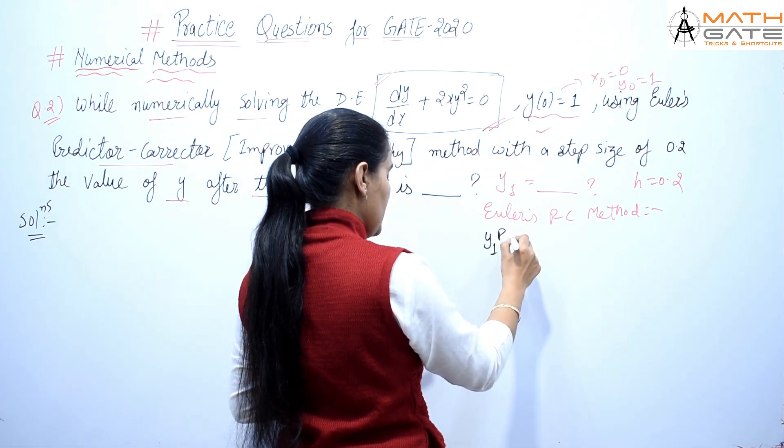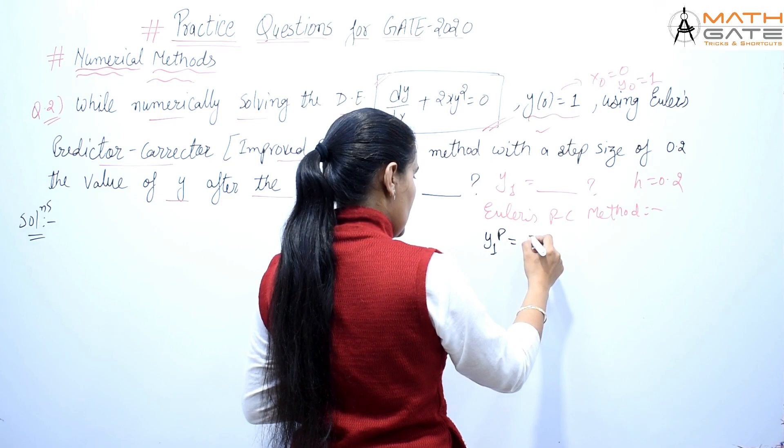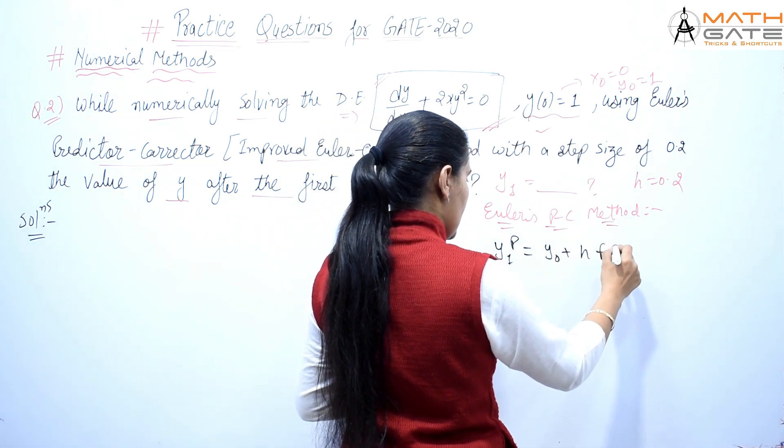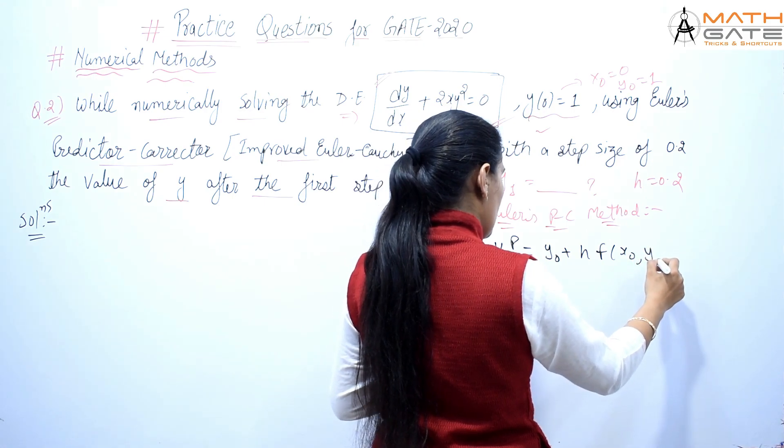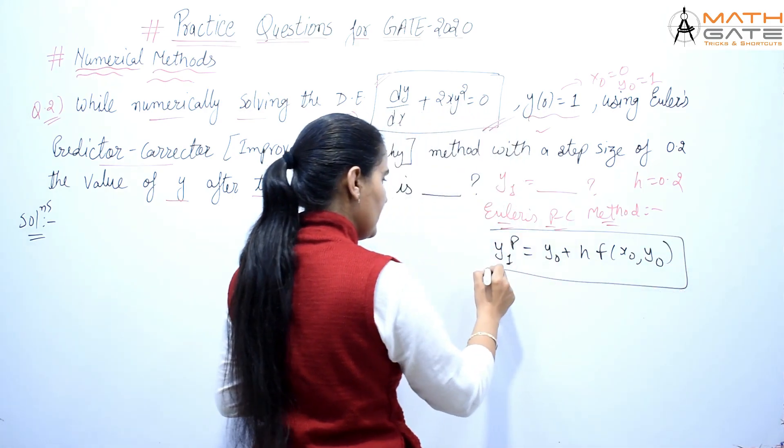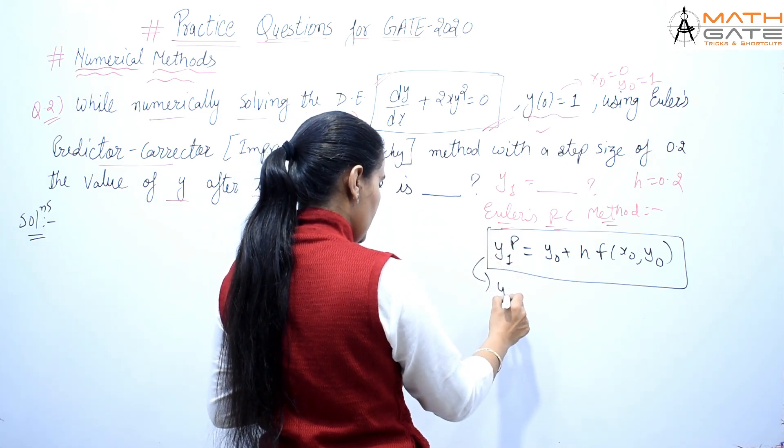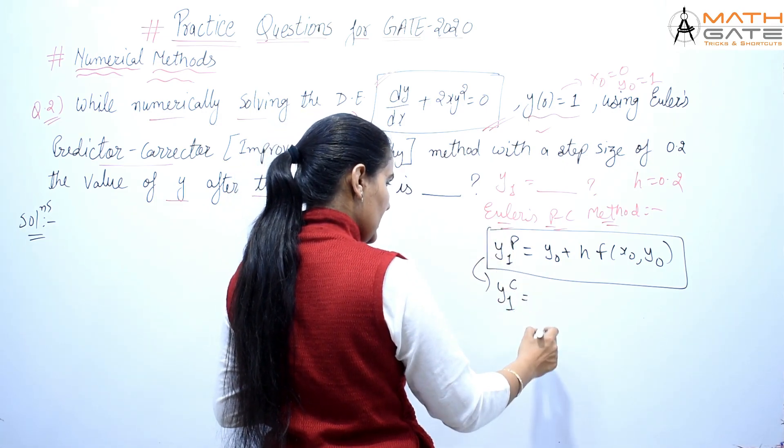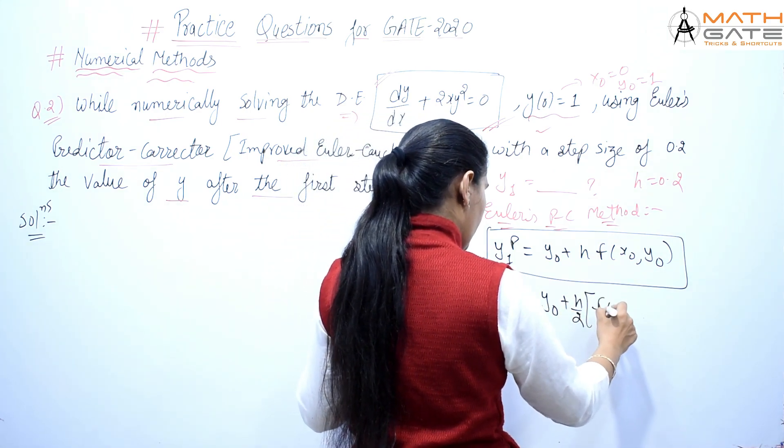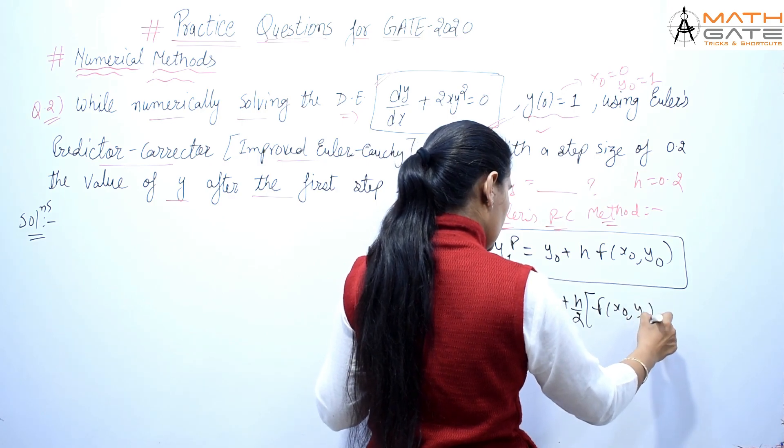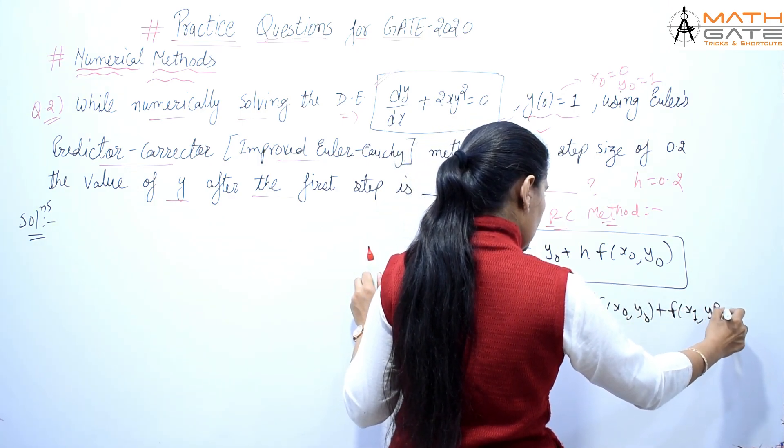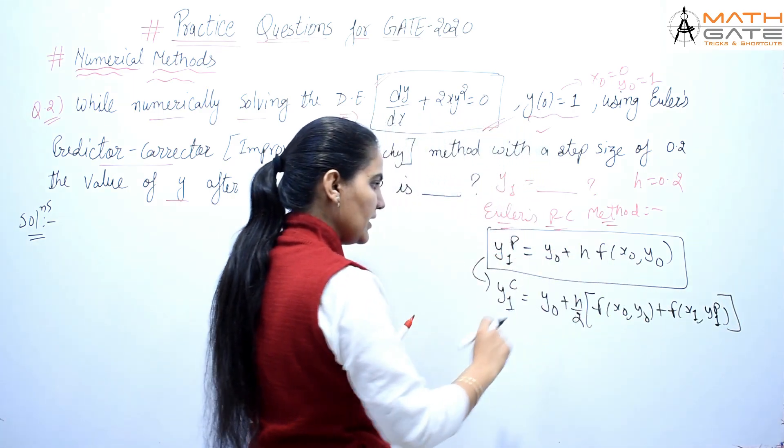The predictor value y₁ᵖ = y₀ + h·f(x₀, y₀). After getting the predictor value, we use it to get the corrector: y₁ᶜ = y₀ + h/2[f(x₀, y₀) + f(x₁, y₁ᵖ)].